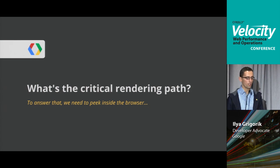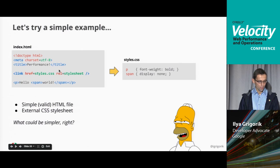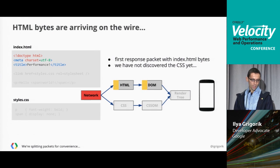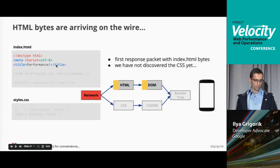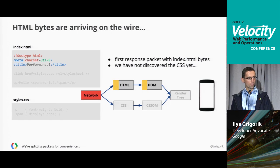Now let's look at the critical rendering path. Starting with a simple example — a valid HTML5 page with Hello World and one external stylesheet. You'd think this should load in 10 milliseconds, but it's more complicated. As we receive bytes from the server in chunks, we start constructing the DOM incrementally. When we discover the link tag pointing to an external CSS resource, we've received all the DOM but still can't paint anything.